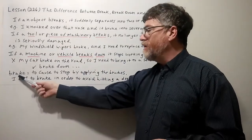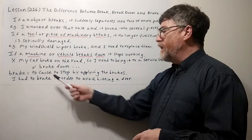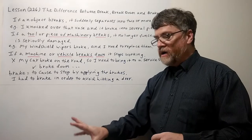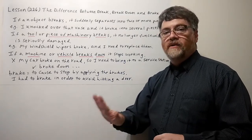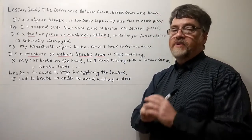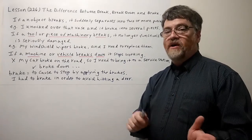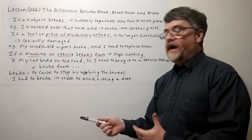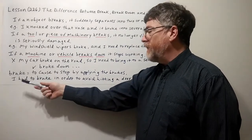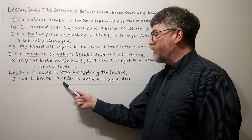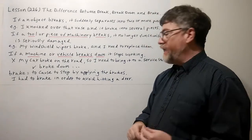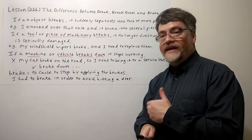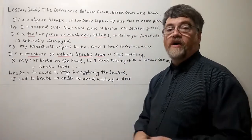Now let's look at brake spelled B-R-A-K-E. Remember, this means to cause to stop by applying the brake — that part of the car that you step on to slow it down or stop. That is also called a brake, pronounced exactly the same as B-R-E-A-K but spelled B-R-A-K-E. We have both a verb and a noun. Here it's the verb: I had to brake in order to avoid hitting a deer. And of course, the brake is also the part of the car you step on.